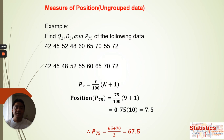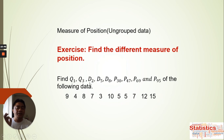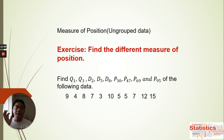Now we have an exercise: find the different measures of position — Q1, Q3, D2, D5, D8, P30, P47, P69, and P95 — of the given data. Arrange the data in order from lowest to highest, then calculate each measure using the formulas for position and look back at the arranged data to find each value.